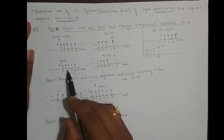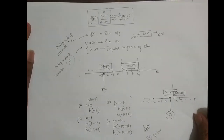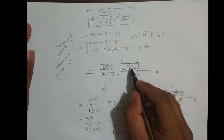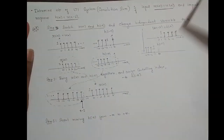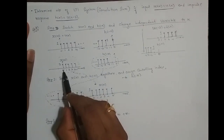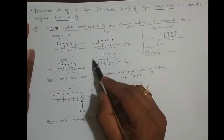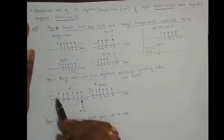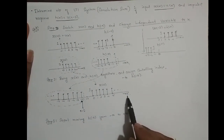In Step 2, once I have changed the independent variable from n to k, I need to bring both sequences together on the same k-axis. x(k) does not move — it remains fixed, starting from 0 and extending to k = infinity. h(-k) is placed at its position, starting from minus 2, minus 3, minus 4, extending to minus infinity. So I have brought x(k) and h(-k) onto the same k-axis.